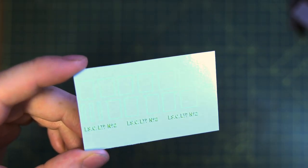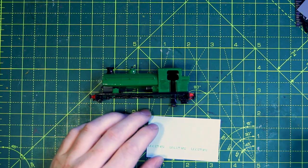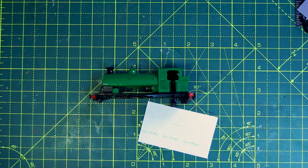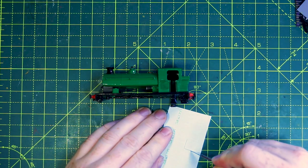To avoid silvering where the edges of the transparent film show through, we're going to be using some microsole to soften it and help it conform to the shape underneath, and microset to get it to stick.